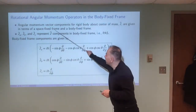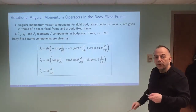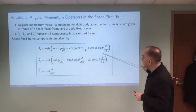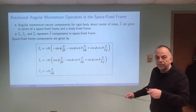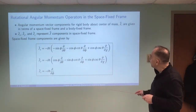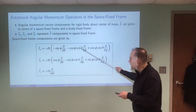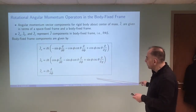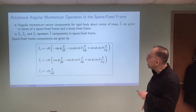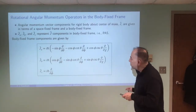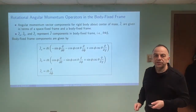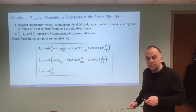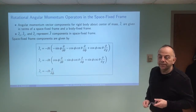Similarly, we have to know the operator components in the space-fixed frame. These are J_X, J_Y, and J_Z, given here in terms of the Euler angles, just as we did before. Make sure you look at these — you see there are some differences, including a sign difference, but they look pretty much the same otherwise. These are the two sets of operators for the components in the body-fixed frame and the components in the space-fixed frame that we'll be working with in this chapter.